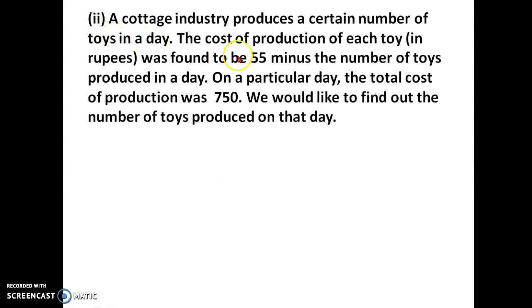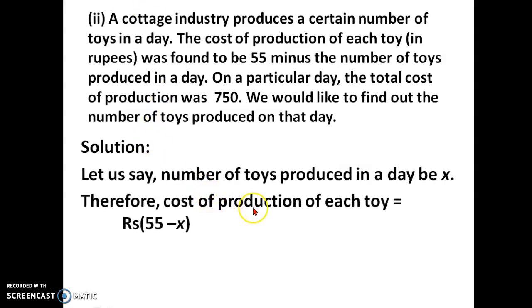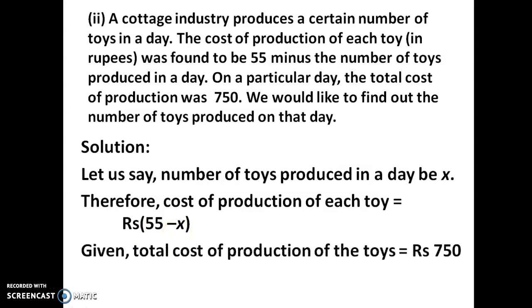A cottage industry produces a certain number of toys in a day. The cost of production of each toy in rupees is found to be 55 minus the number of toys produced in a day. On a particular day, the total cost of production is 750 rupees. We need to find the number of toys produced. Let the number of toys be x, so the production cost of each toy is 55 minus x.